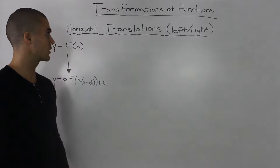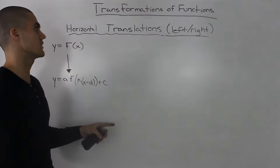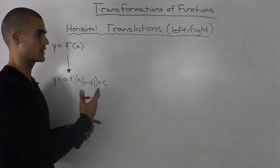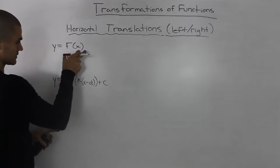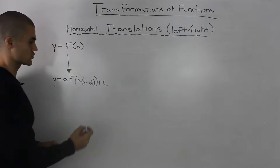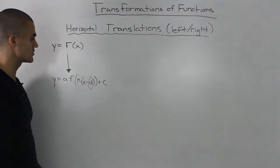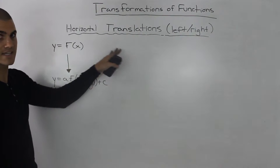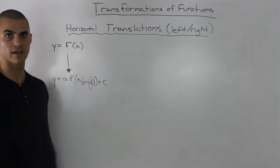What up guys? So now we're going to be talking about horizontal translations in this video. What I mean by a horizontal translation is whether a function is moving left or right. The letter in the transform function that deals with horizontal translations is the d value. As we did in the previous videos, we'll go over the different values that d can take, the different cases, and then we'll describe each transformation and give an example.